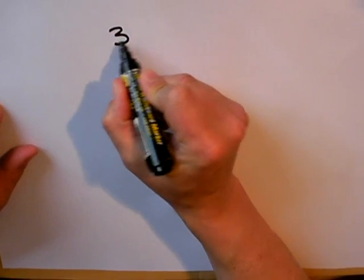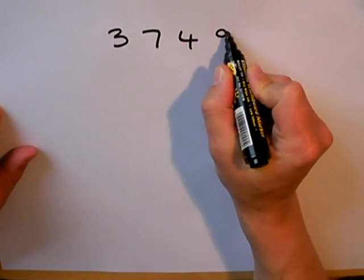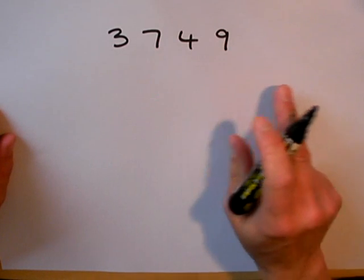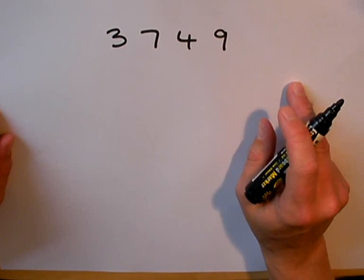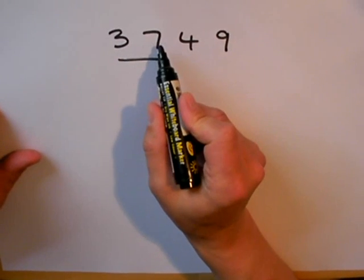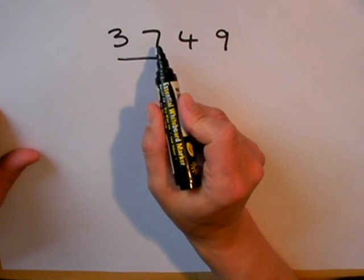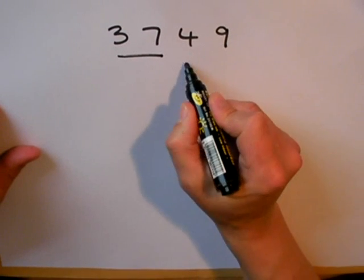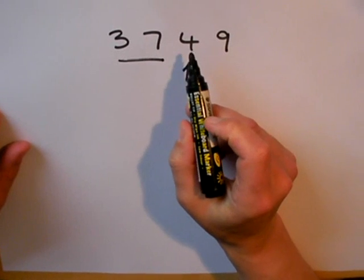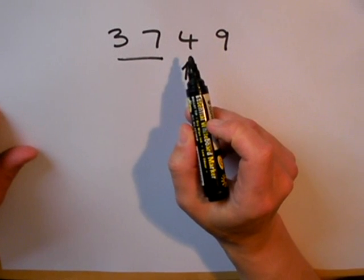Here's an example. I want to round this number 3749 to two significant figures. These two numbers here are my first two significant figures so the rest is going to be rounded off. Just as before I look at my next digits and decide that it's less than halfway so I'm going to round off.